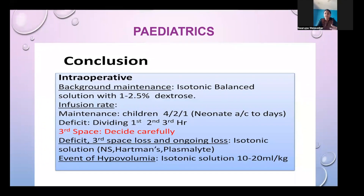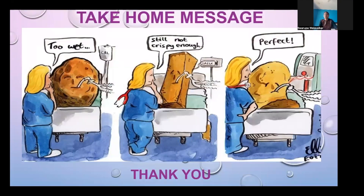In conclusion for pediatric patients: intraoperatively, use isotonic balanced solutions — never use hypotonic solutions — with 1–2.5% dextrose for maintenance. Apply the Holliday-Segar formula (4-2-1 rule). Give half the deficit in the first hour and one-quarter each in the second and third hours. Third-space loss, deficits, and ongoing losses should all be replaced with isotonic solutions. In hypovolemia, use isotonic solutions only.